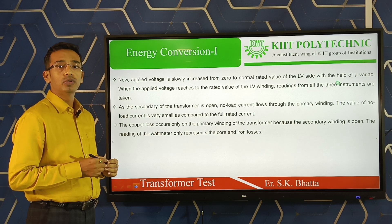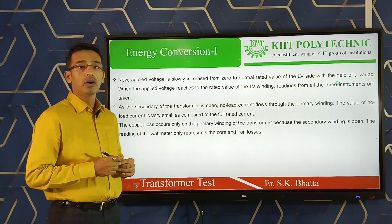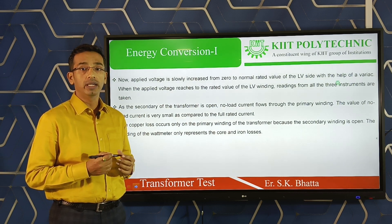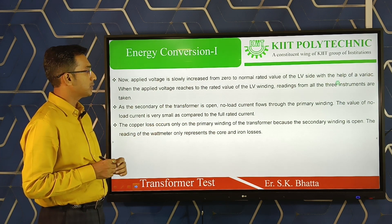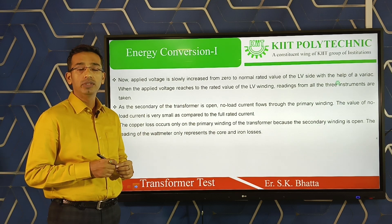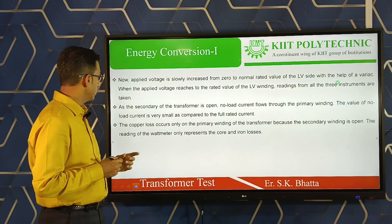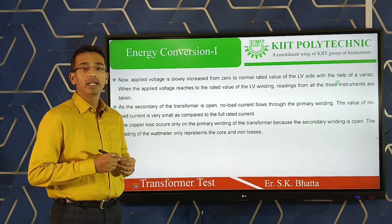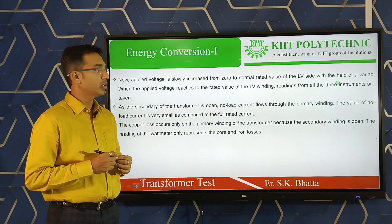Since the secondary side is open, no current flows through the primary winding under load conditions. The no-load current is very small — about 4 to 6 percent of the full-load current. The copper loss occurs only in the primary side, and since the current is small, the copper loss is negligible. Therefore, in the open circuit test we measure the core loss or iron loss of the transformer.